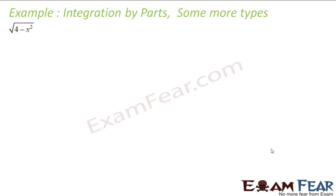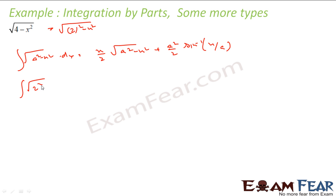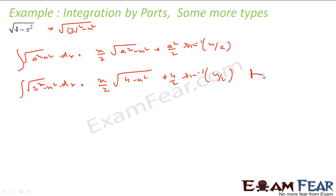Let's solve some questions using these formulas. I need to find ∫√(4−x²) dx. This is ∫√(2²−x²) dx, so a = 2. Applying the formula directly: (x/2)√(4−x²) + (4/2)·sin⁻¹(x/2) + C, which simplifies to (x/2)√(4−x²) + 2·sin⁻¹(x/2) + C.